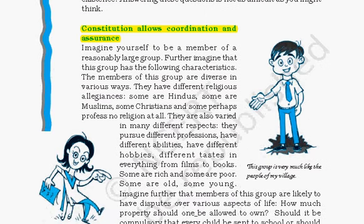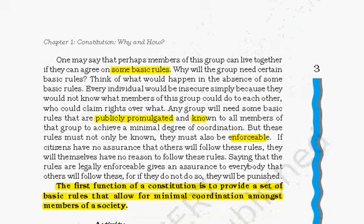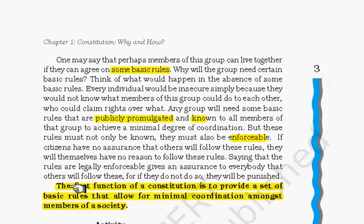India is a very diverse country having different types of groups — for example different religious groups, different castes, different groups who have various levels of sources of income, people of different age, of different gender, etc. But in the end we all have to live together in peace, so all this diversity needs to coordinate among each other. The first function of the constitution is that it provides a set of basic rules which are publicly promulgated, known to all members of society, and are enforceable, hence people will respect them. This allows for minimal coordination among the members of society.